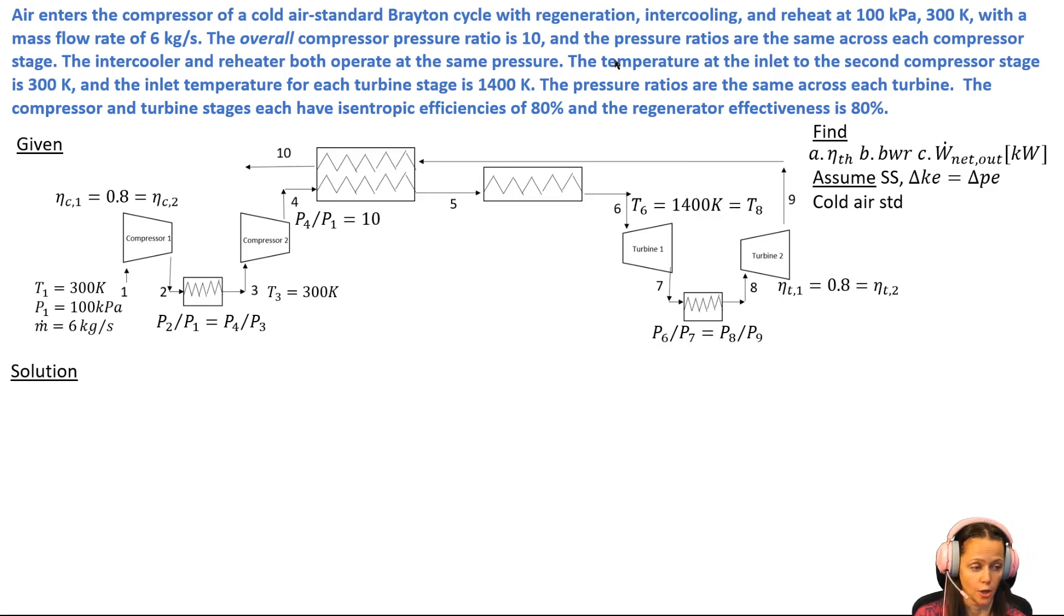For this problem we've got a cold air standard Brayton cycle with regeneration, intercooling, and reheat. We're given some inlet conditions, a mass flow rate, and the only interesting thing about this problem is they give us what's called the overall compressor ratio.